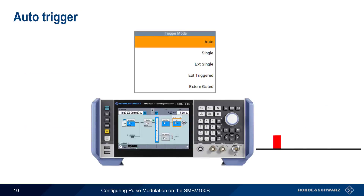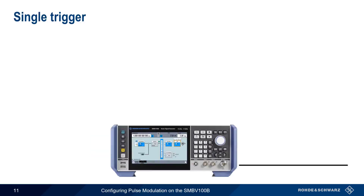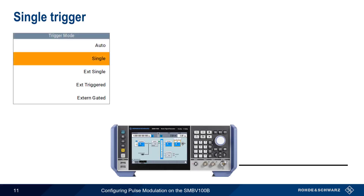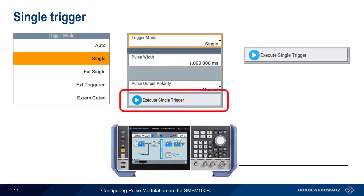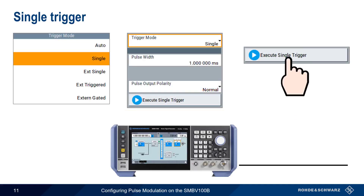Auto mode repeats the defined pulses continuously, without needing any user intervention or external input. In Single mode, the single or double pulse will be transmitted each time the Execute Single trigger button is pressed. Remember that in Single mode, only a single pulse or pulse pair is transmitted with each trigger.